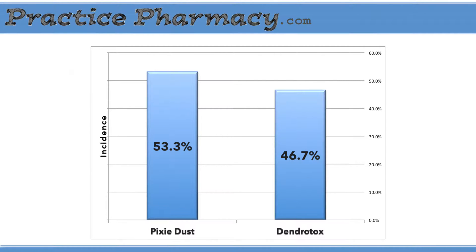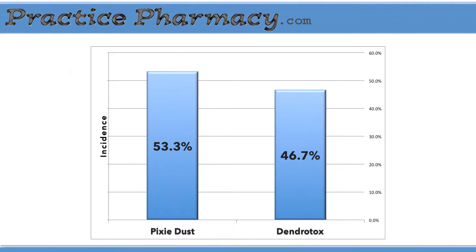Those that used the real medication had a lower incidence of rash. You can also see from the control group that not everyone was going to get a rash in the first place — there wasn't a 100% incidence of rash in those that got the fake medication. And looking at the treatment group, not everyone who used the medication avoided getting a rash — there wasn't a 0% occurrence in those that got the actual medication.